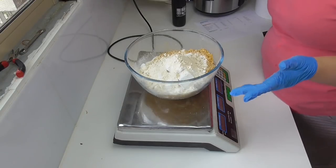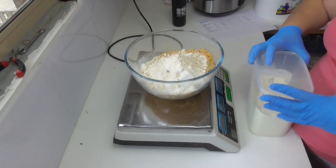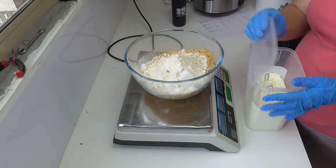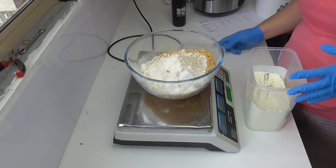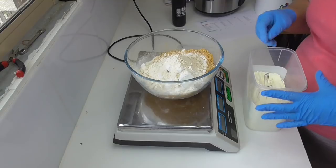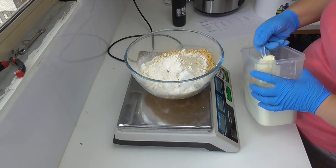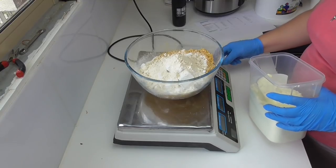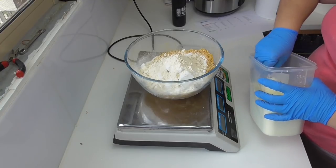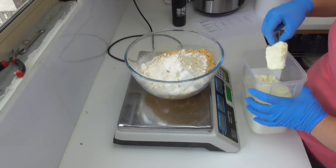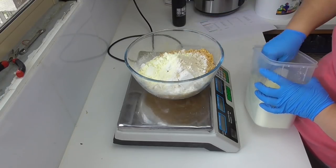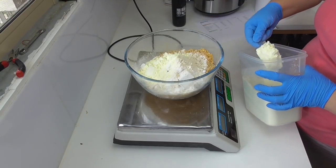Now of course we can't have a bath milk without adding some milk powder. So you can put whichever sort of milk powder that you want in here. I'm using buttermilk powder, but you could use goat's milk, you could possibly even use coconut milk powder, any milk powder that you want will be fine. And you can even put in a combination of milk powders as well.